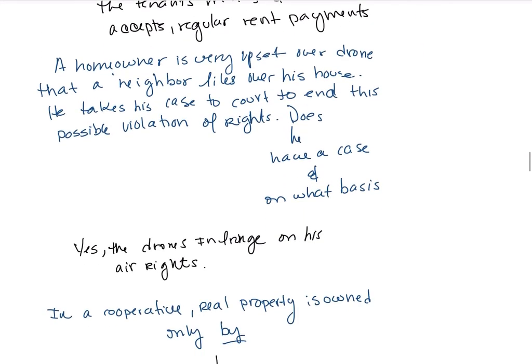A homeowner is very upset that a neighbor's drone flies over his house. He takes his case to court to end this possible violation of his air rights. The question is whether he has a case based on the drone flying over his property.